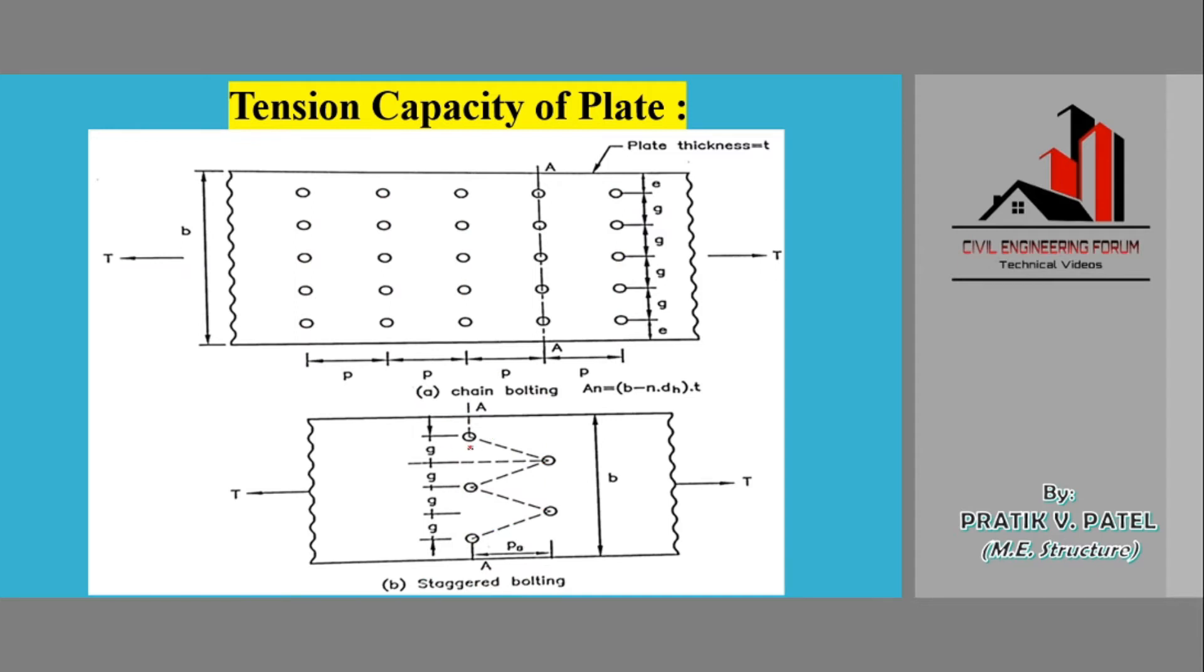I have shown numerous terms here. This is known as gauge length, the vertical distance between the bolts perpendicular to the line of action. This distance is known as pitch and the thickness of this plate is abbreviated by small t. The main thing was the failure plane generation due to the chain bolting and staggered bolting.